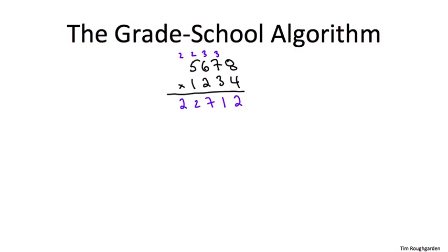When we do the next partial product, we do a shift. Effectively we add a 0 at the end, and then we do exactly the same thing. And so on for the final two partial products. And finally, we just add everything up.